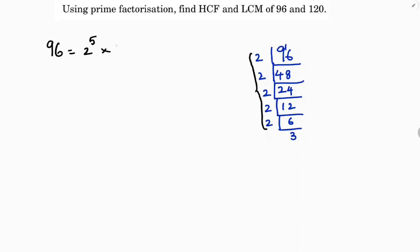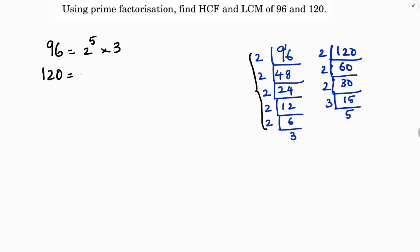Next, for 120, the prime factors are: 2 times 60, 2 times 30, 2 times 15, 3 times 5. So 120 is 2 cube into 3 into 5. Now we need to find HCF and LCM.